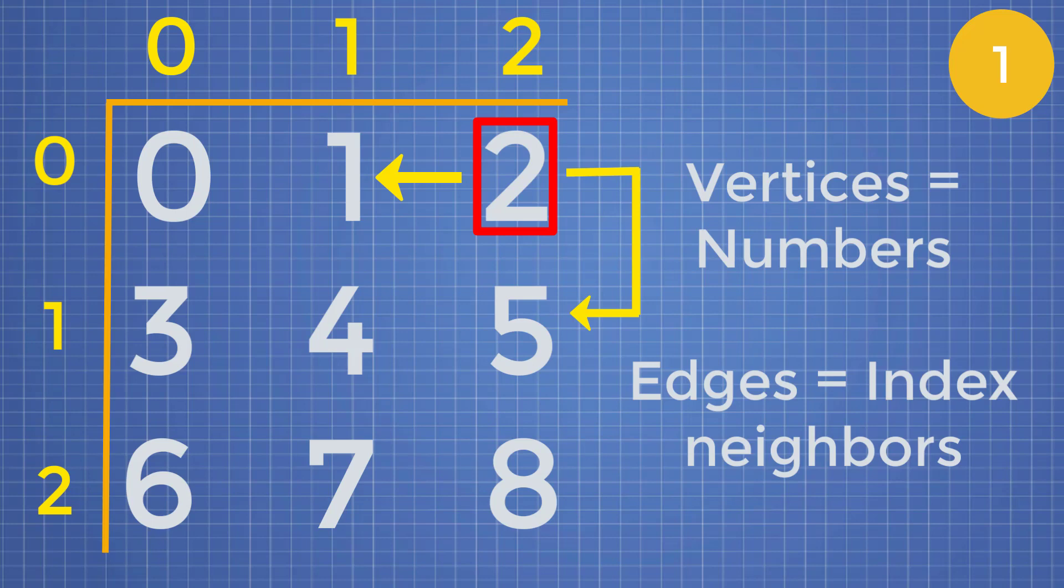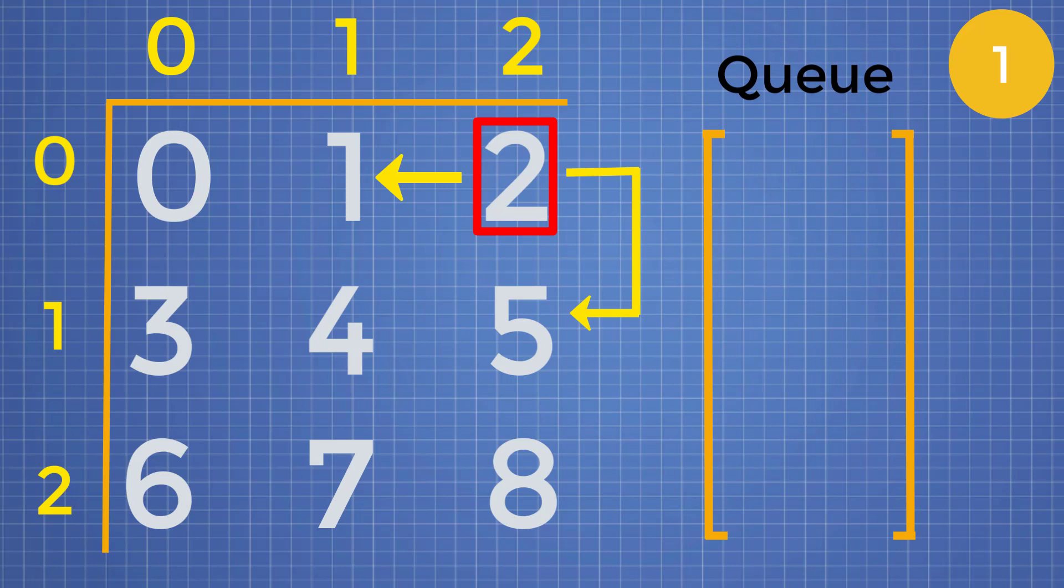So if we wanted to perform a breadth first search on this matrix, starting at node two, we would obviously need to utilize a queue. Now, in order to start this breadth first search off, just like how we discussed, we need to add all of the neighbors inside of our queue from our starting node. So in this case, we're going to add the positions of our neighbors. So we'd first add position zero one, which is corresponding to vertice one. And then we would add the position one, two, which corresponds to vertice five.